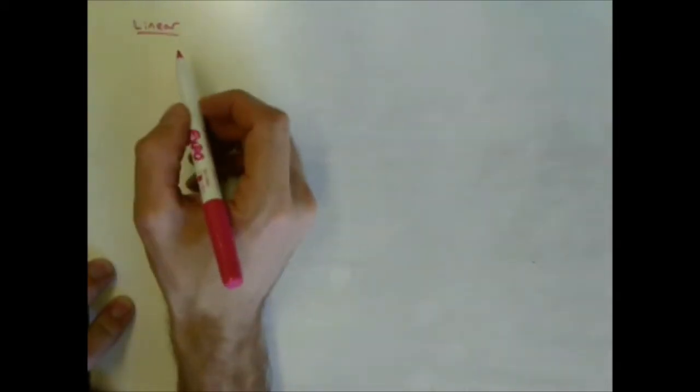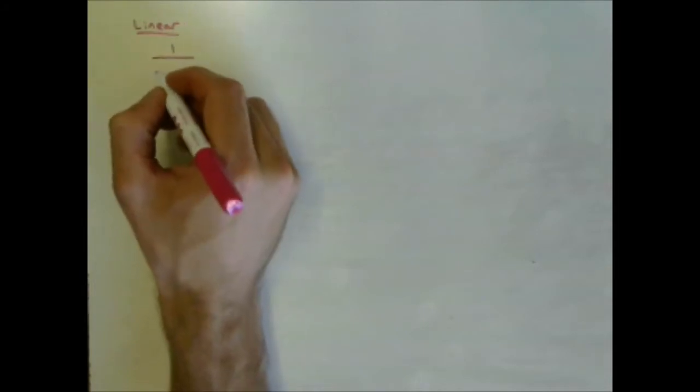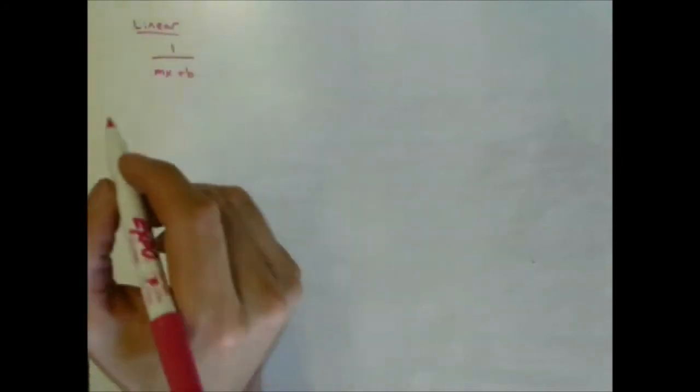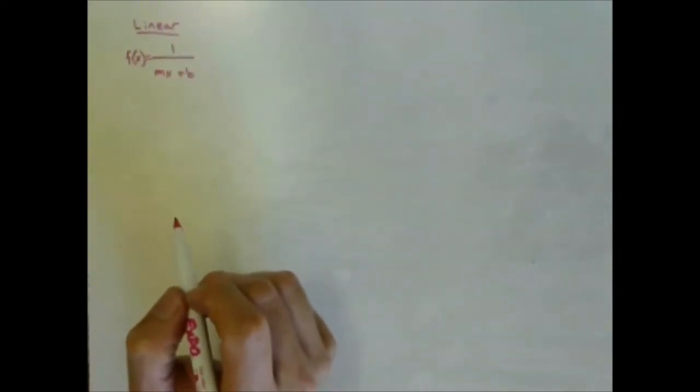Today we're solving rational equations and inequalities. We're looking at the same types of equations we've dealt with so far: the reciprocal of a linear, the reciprocal of a quadratic, and then the form f(x) = (ax+b)/(cx+d). Either way, you're going to have a polynomial in the denominator to create a rational function. The general form of the reciprocal of a linear is based on y = mx+b, so you have one over that: f(x) = 1/(ax+b).